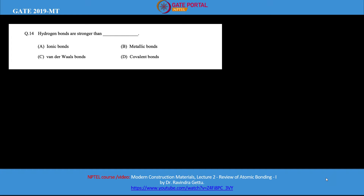In this video we are going to look at a question from GATE 2019 metallurgy paper. You can use the NPTEL video 'Modern Construction Materials, Lecture 2: Review of Atomic Bonding 1' by Dr. Ravindra Gittu as a reference. The question is: hydrogen bonds are stronger than — with options ionic bond, metallic bond, van der Waals bonds, and covalent bonds.